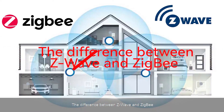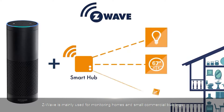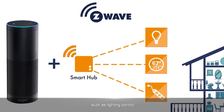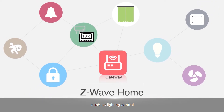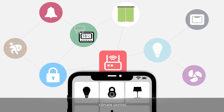The difference between Z-Wave and ZigBee: Z-Wave is mainly used for monitoring homes and small commercial buildings, such as lighting control, smoke detectors, smart door locks, security, climate control, and other scenarios.